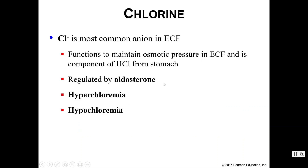Chlorine is our first anion — a negatively charged ion — and is the most common anion in the extracellular fluid. It helps maintain osmotic pressure in the extracellular fluid, and we know it best as a component of hydrochloric acid, also known as stomach acid. Chlorine is also regulated by aldosterone, and while hyperchloremia and hypochloremia don't happen frequently, the terms exist.